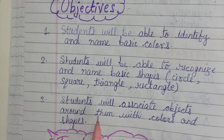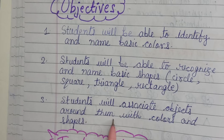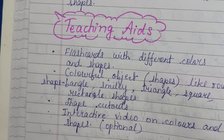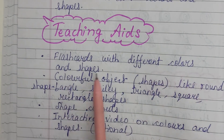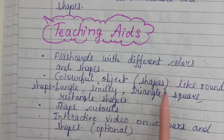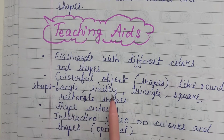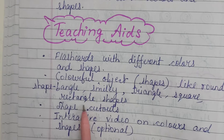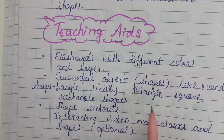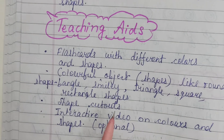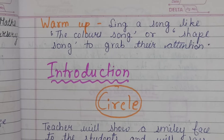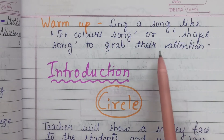Students will associate objects around them with colors and shapes. Teaching aids include: flashcards with different colors and shapes, colorful objects of the shapes — like for round shape you can use bangles or a smiley, for triangle you can use any toy, square and rectangle shapes — all objects of the shapes, shape cutouts for the activity, and an interactive video on colors and shapes, which is optional.